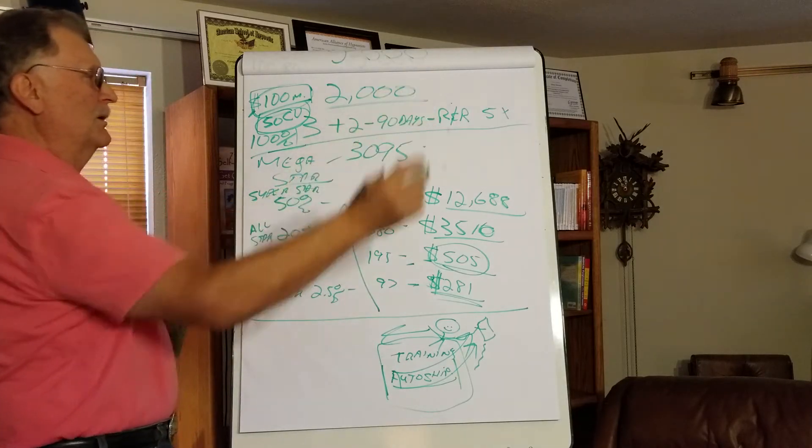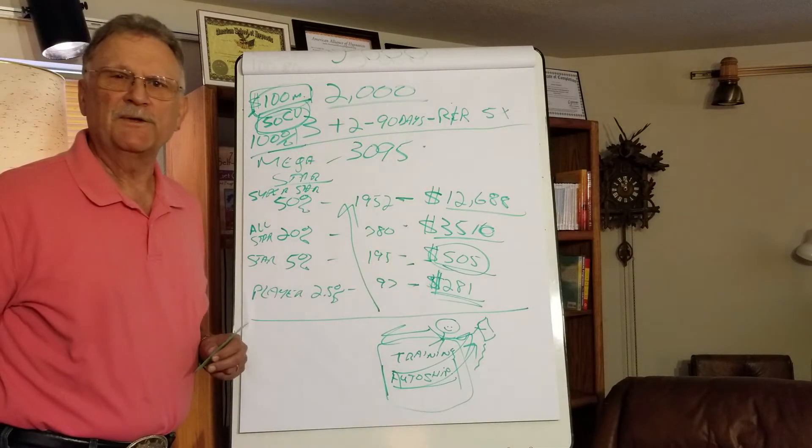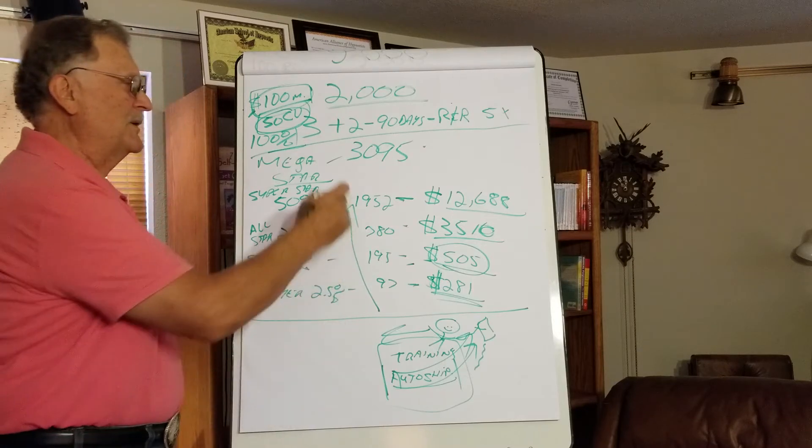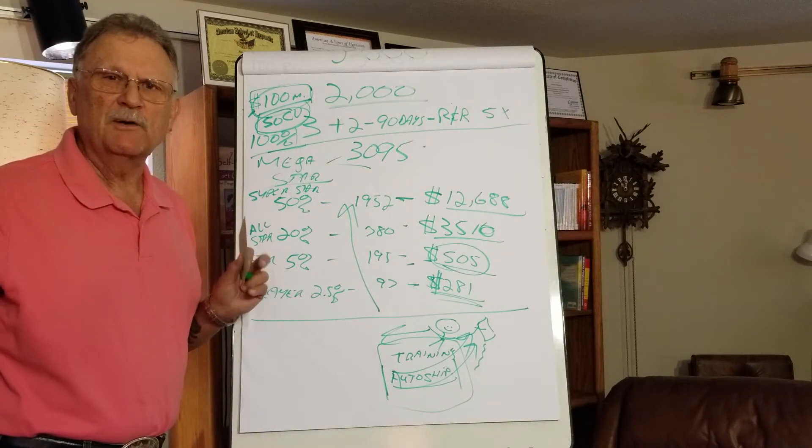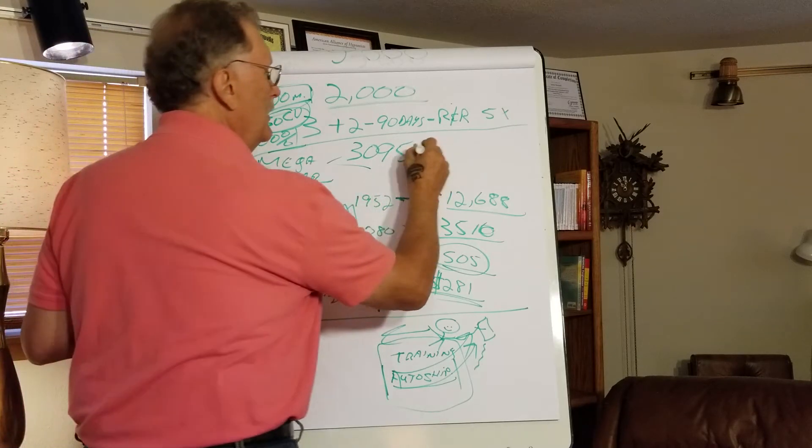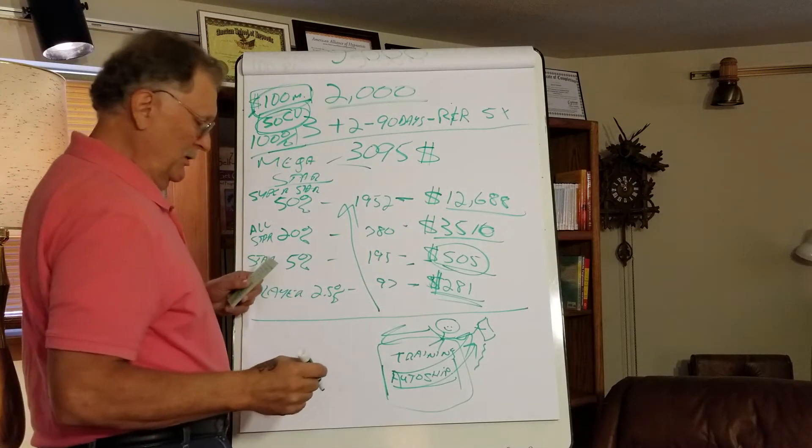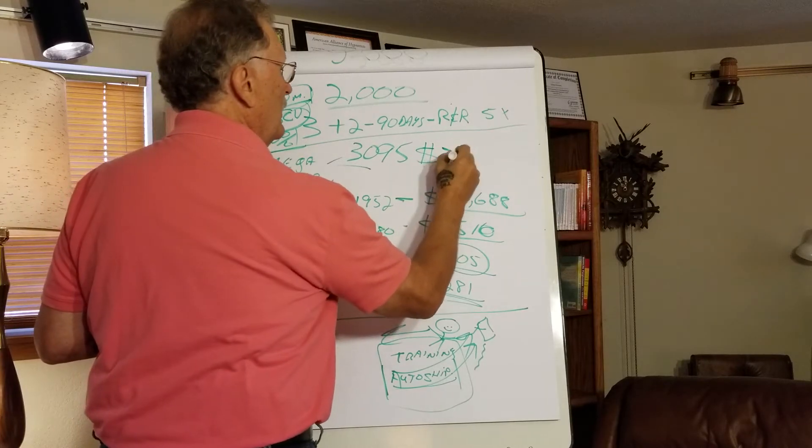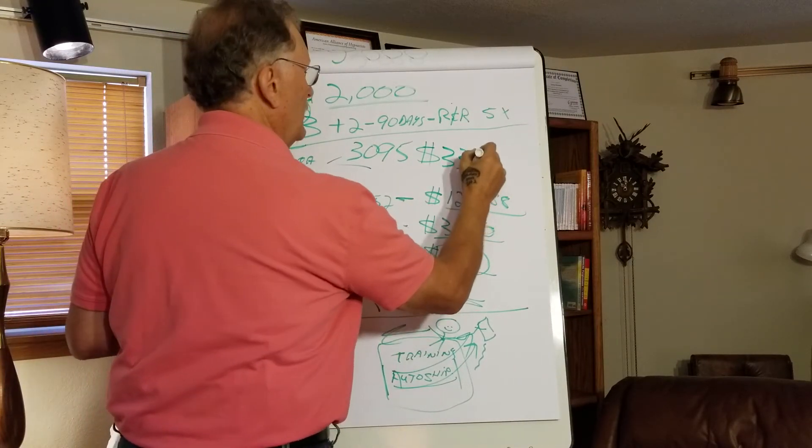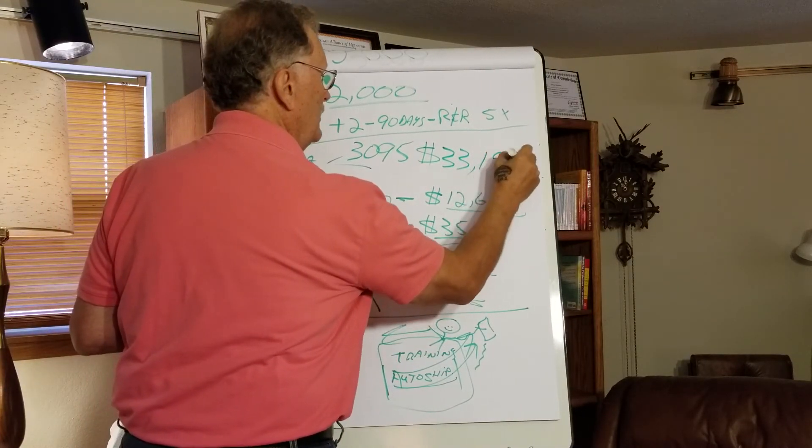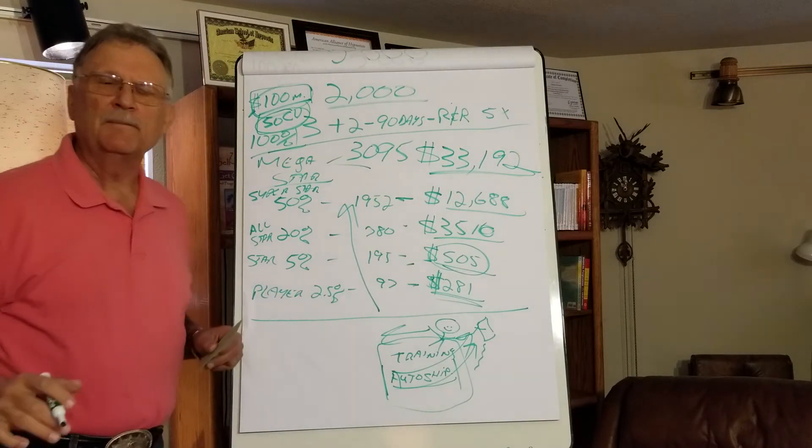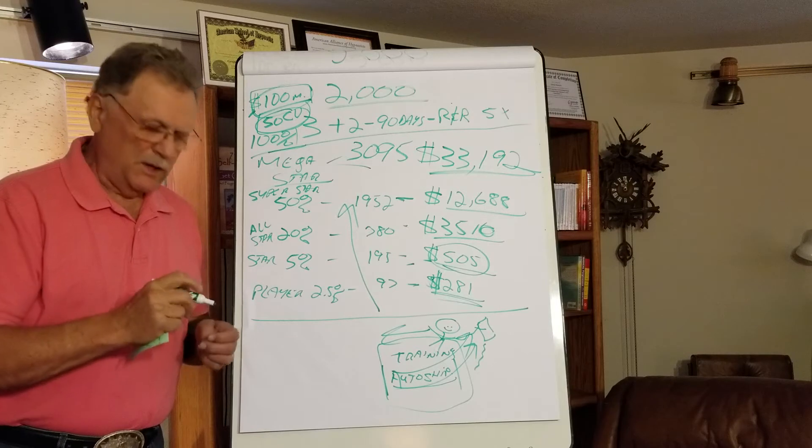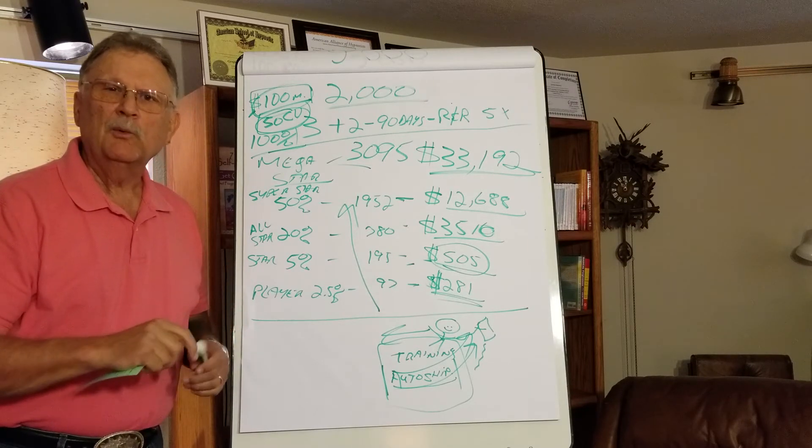And then megastar, your business took on a life of its own. Boom. That doesn't mean this was 100% duplication. It means literally people just lit on fire, and this isn't the highest income by any stretch, but for our example, $33,192 a month isn't too bad, is it?